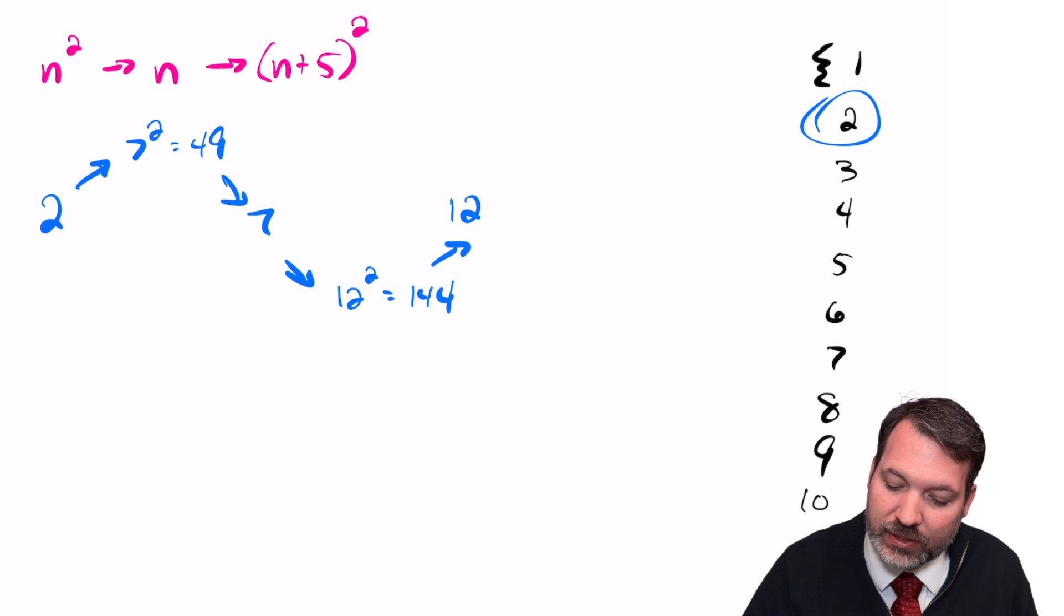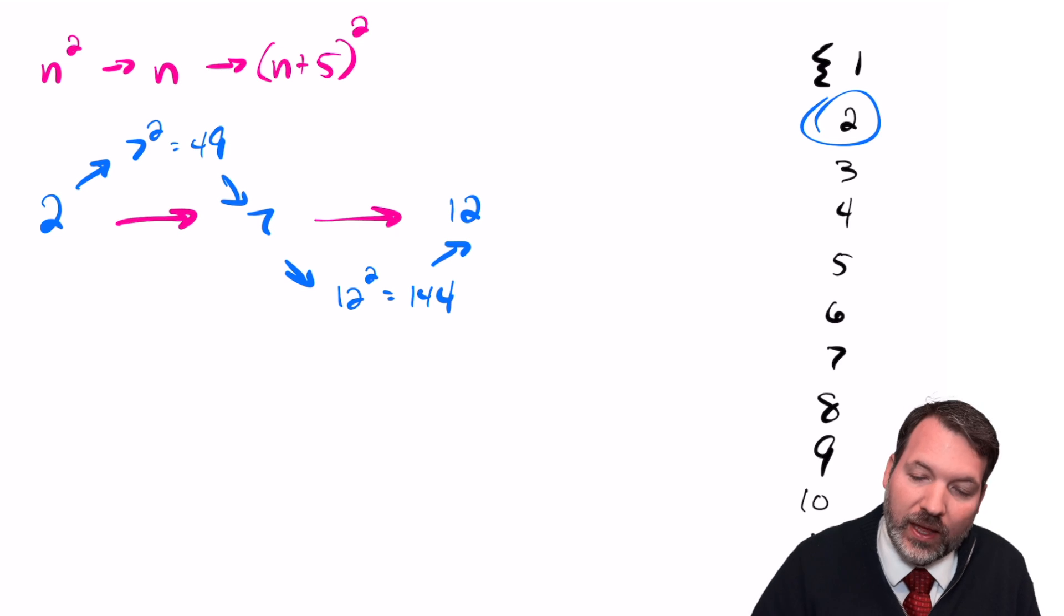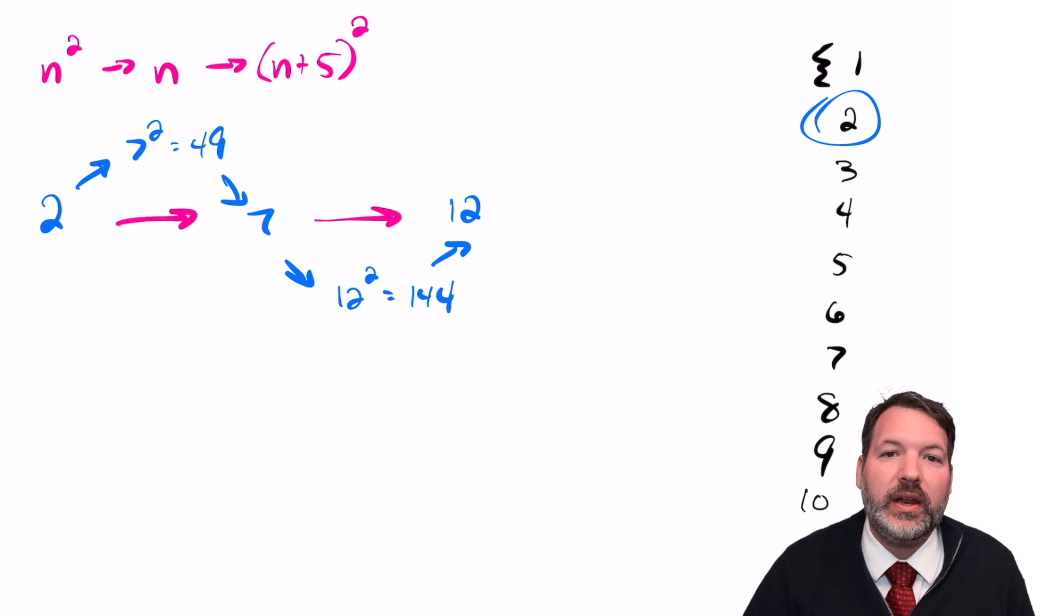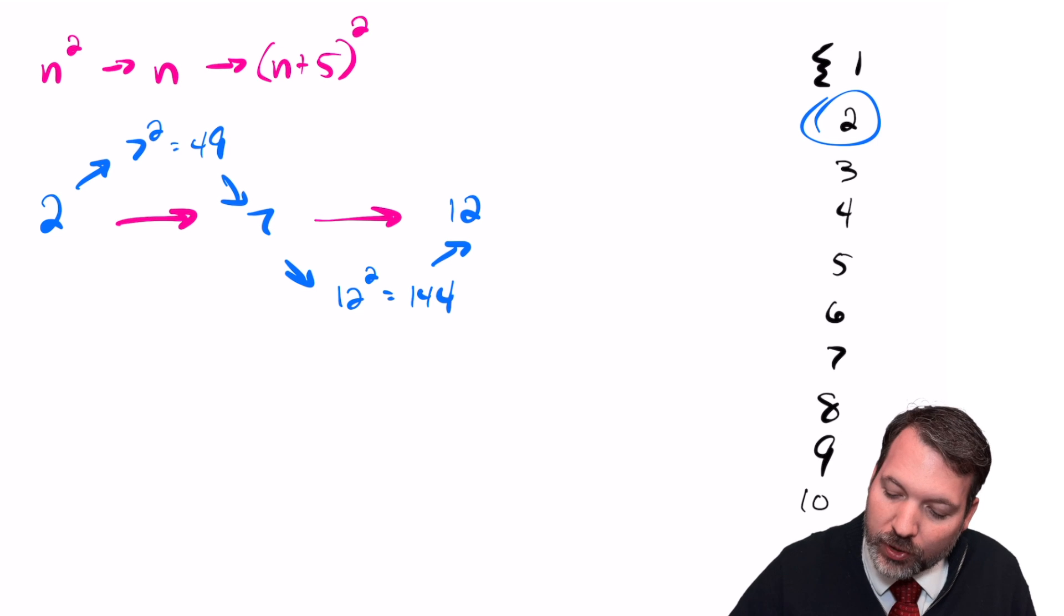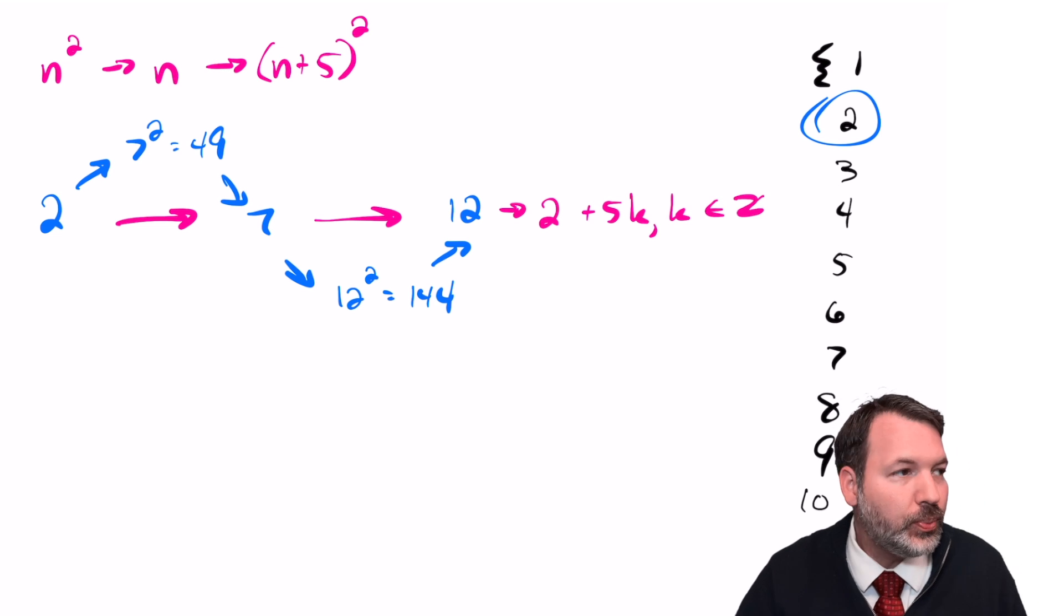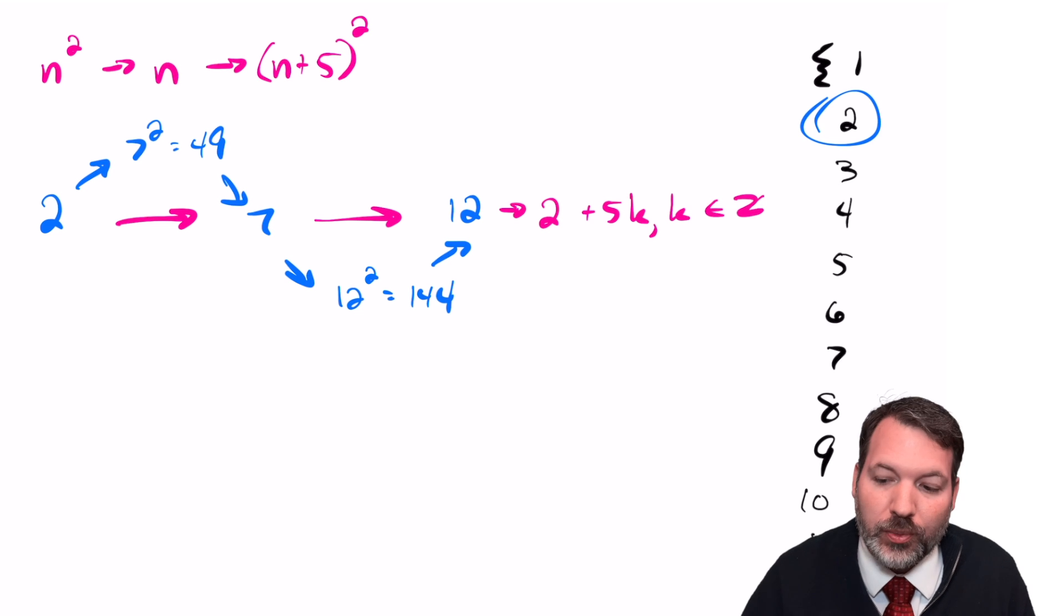And so this leads us to our first insight. If we have some n in the set, then every number that is 5, 10, 15, 20, greater than that number will also be in the set. In other words, we can symbolize that 2 plus 5k, where k is simply some integer. 2 plus any multiple of 5 will also be in this set. So for example, we know that 7 has to be in the set, 12, 17, 22, on and on forever.